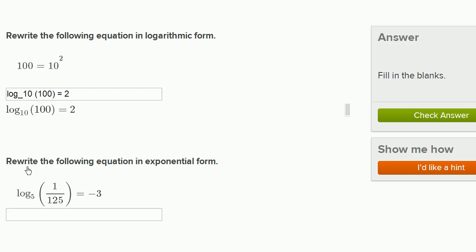Now they ask us to rewrite the following equation in exponential form. This is log base 5 of 1 over 125 equals negative 3.